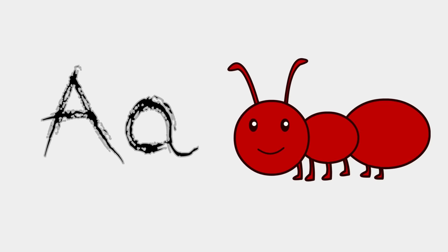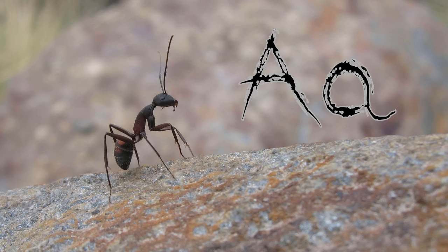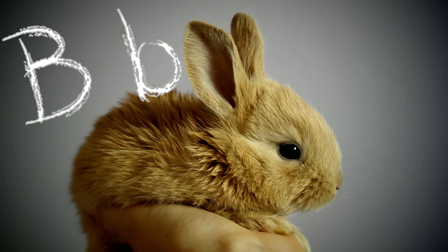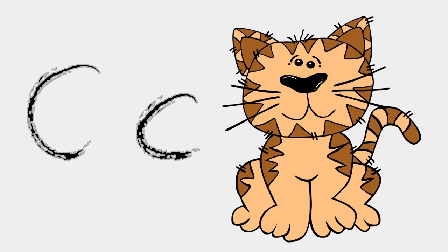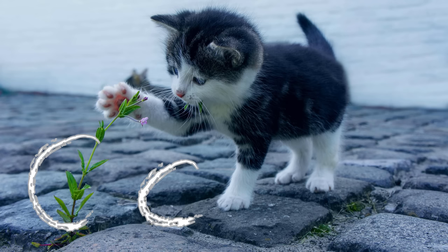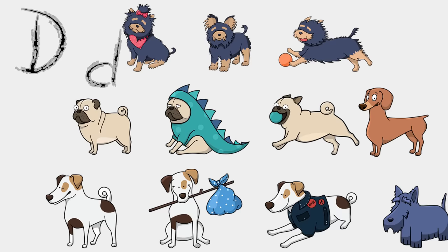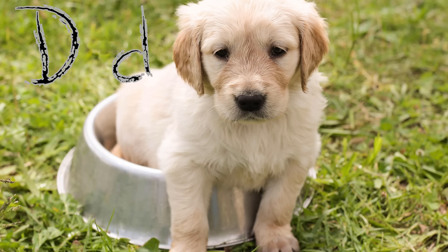A is for ant. Eh, ant. B is for bunny. Buh, bunny. C is for cat. Kuh, cat. D is for dog. Duh, dog.